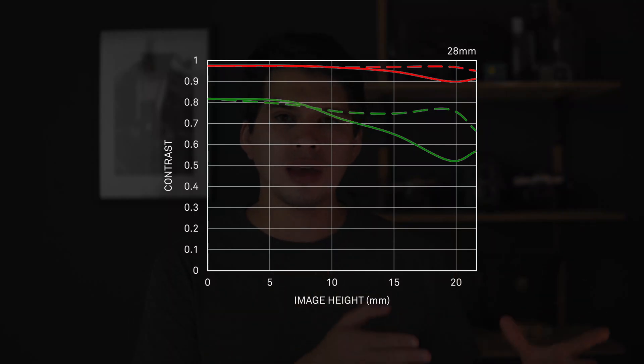In the MTF charts there are two colored lines: the red one represents contrast and the green one represents sharpness. There are also two types of lines — solid lines and dotted lines. The solid lines represent the lines running perpendicular to the test direction, and the dotted lines the ones running parallel. The distance between the dotted line and the solid line determines the quality of the bokeh — if they're very separated, the bokeh is going to be distracting and noisy; if they're very close, the bokeh is crisp, creamy and smooth.